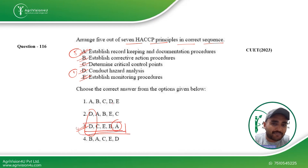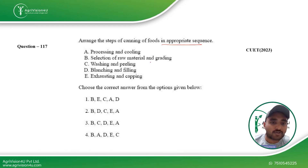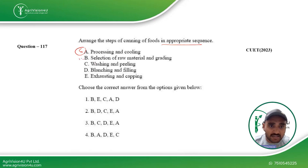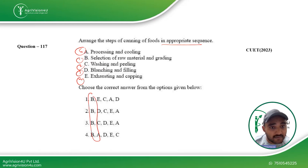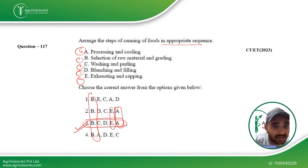I've told you many times not to skip HACCP as it is one of the primary topics from which questions are asked. Next, arrange the steps of canning of foods in the correct sequence. Processing and cooling is the final step (fifth). Selection of raw material is first, washing and peeling is second, blanching and filling is third, exhausting and capping is fourth. So option B is first and option A is last, making the third option the right answer.